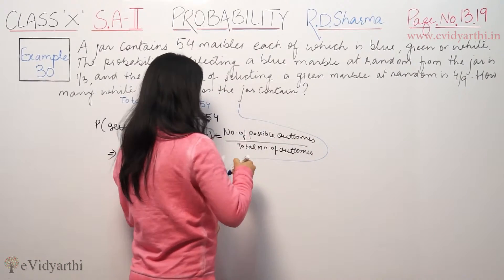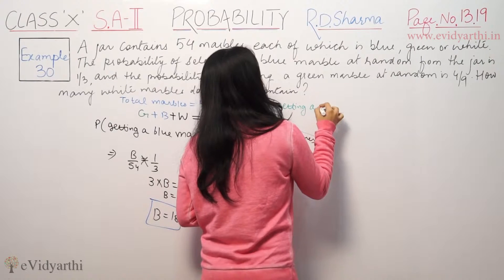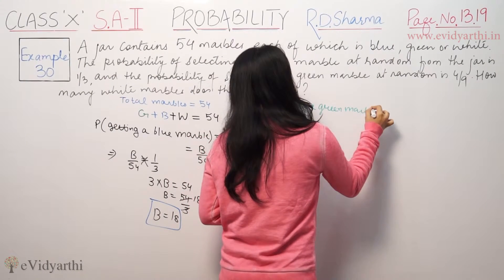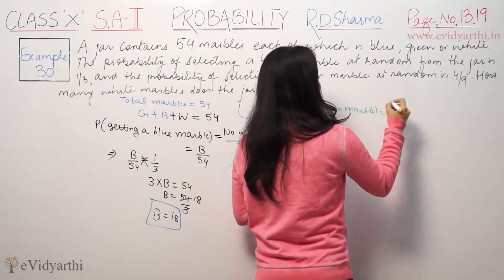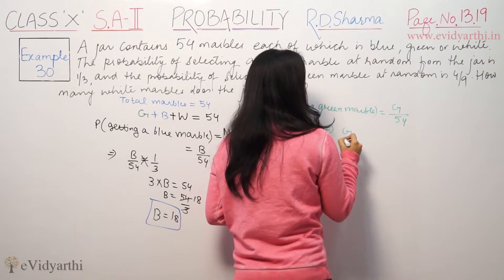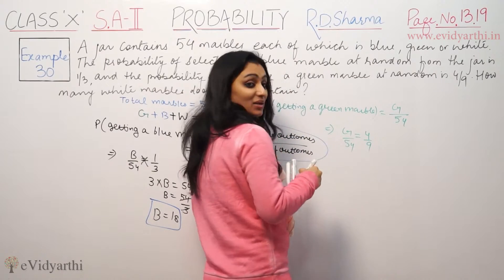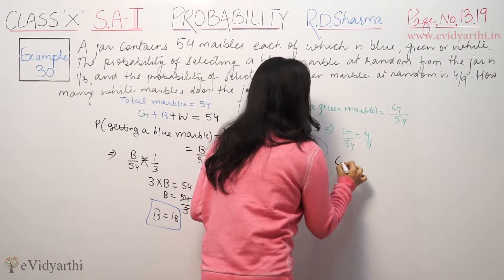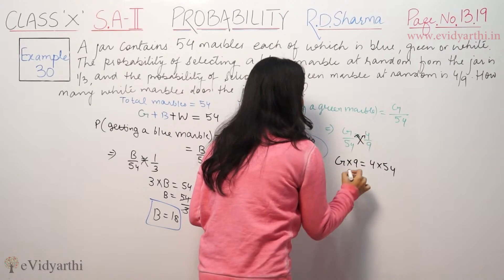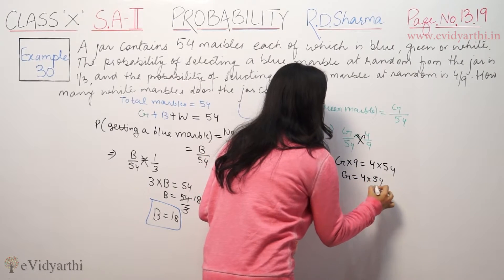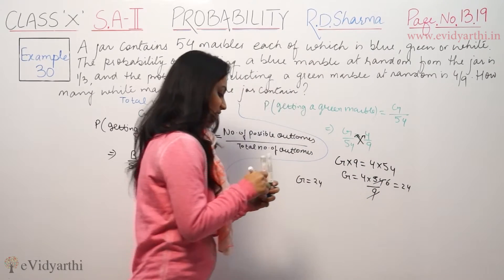Now same way, how many are the green marbles? So probability will be green marbles over 54. And green probability is 4 by 9. So these are equal. Cross multiply, G times 9 equals 4 times 54. So G equals 4 times 54 by 9, which is 24. So green marbles are 24.